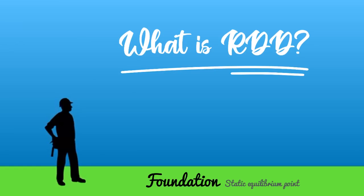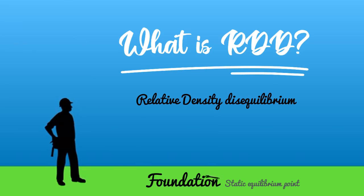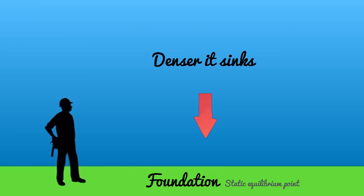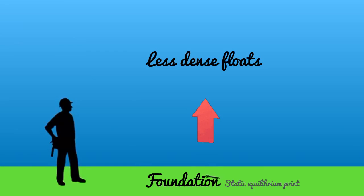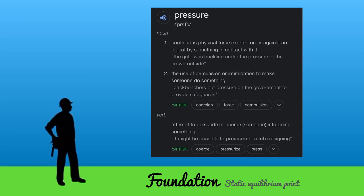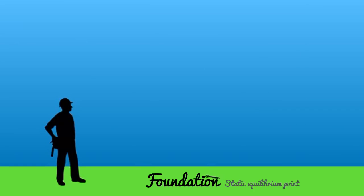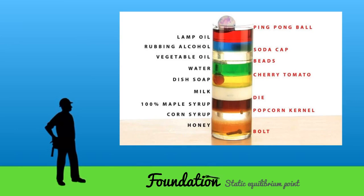Now, what is RDD — relative density disequilibrium? If something is denser, it will sink; it goes down because the medium around it cannot support it. If it is less dense, it's going to go up because the medium around it will support it. This is caused by pressure, which will push it up. This is why you get the separations in a density tower — the denser is at the bottom and the less dense at the top. It sorts itself out due to its densities.